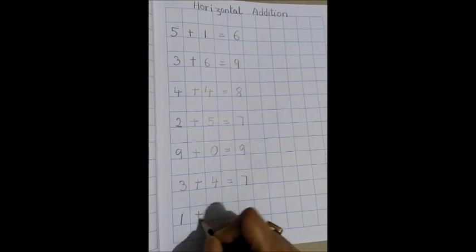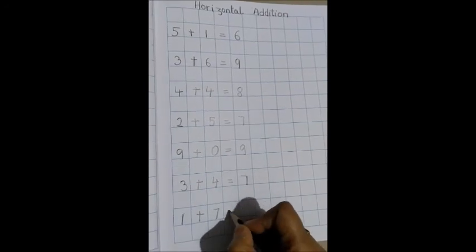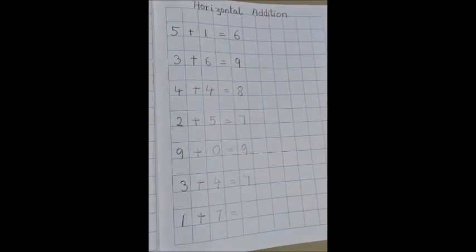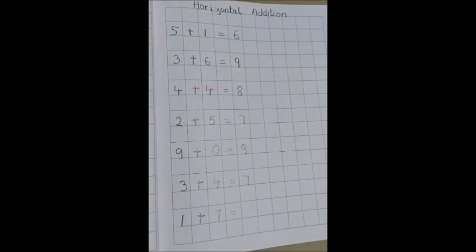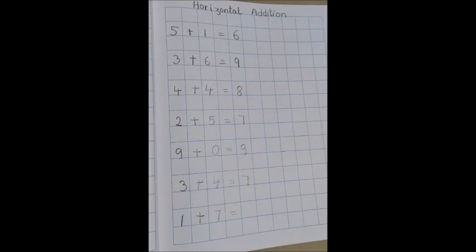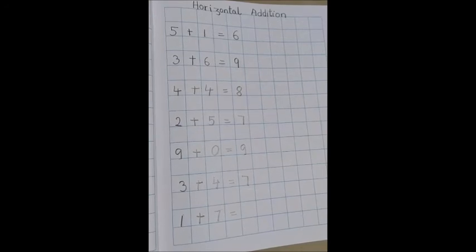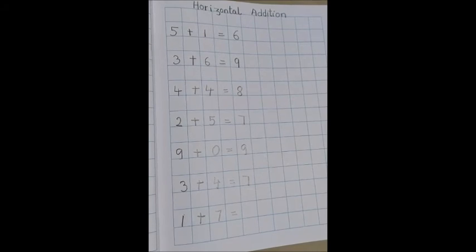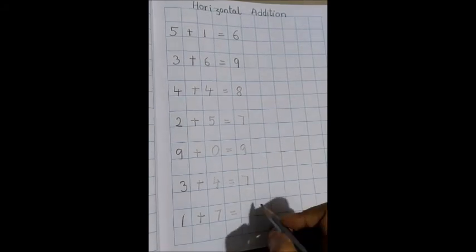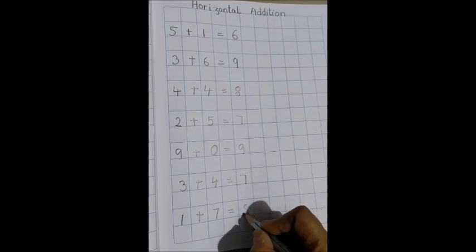1 plus 7 equals to. Which is the bigger number? 7 is the bigger number. And how many fingers out? 1 finger out. So 7 and 1? 7 in your mind. After 7 what comes? 8. The answer is 8.